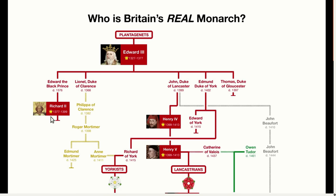But Richard II ended up being quite a nasty king, so in 1399 many of the nobles rallied together and had him deposed. Richard II did not have any children, and by then John, Duke of Lancaster had died. So the next most senior male in the line of succession was Henry Bolingbroke, who therefore became King Henry IV. And this is where the roots of the Wars of the Roses began.